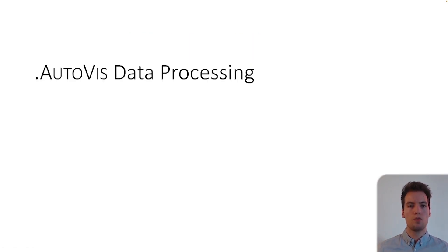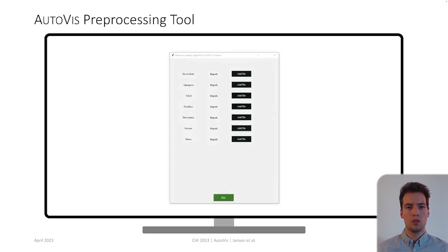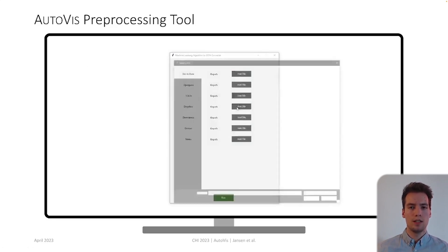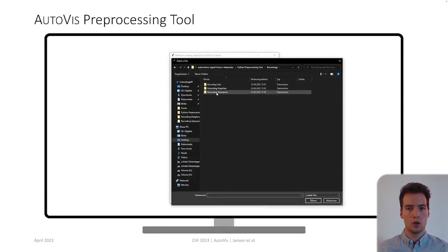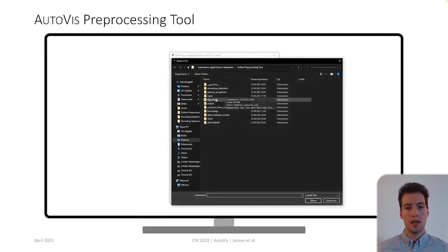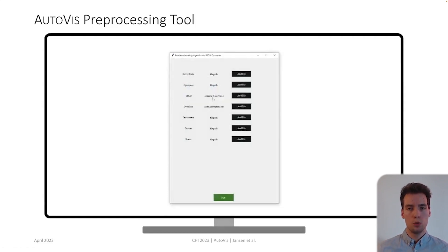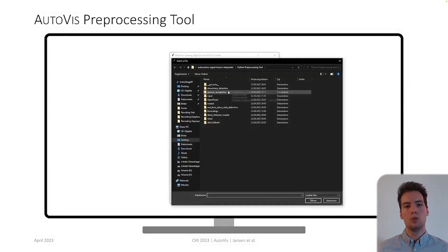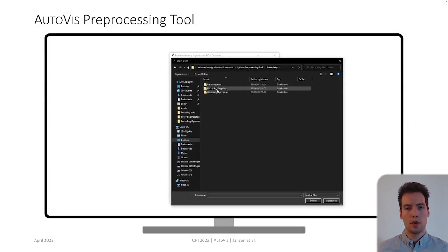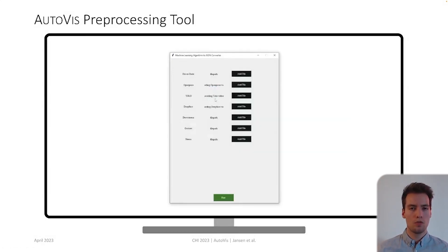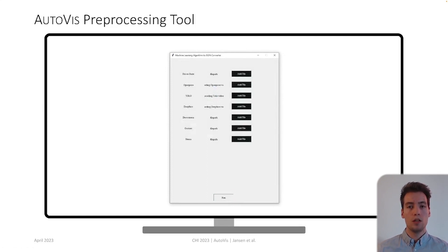We also provide a companion tool that pre-processes data according to the AutoViz data specification. The companion converts low-level signals such as pupil size into high-level information such as cognitive load or drowsiness. We use state-of-the-art deep learning such as DeepFace, OpenPose or YOLO.